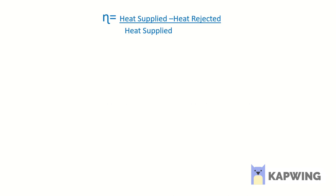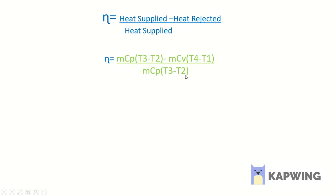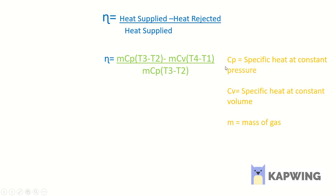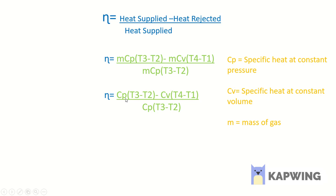Putting these values into the efficiency formula, we get: efficiency equals M·Cp·(T3 minus T2) minus M·Cv·(T4 minus T1), divided by M·Cp·(T3 minus T2), where Cp is the specific heat at constant pressure, Cv is the specific heat at constant volume, and M is the mass. Cancelling out the mass from numerator and denominator, we get: Cp·(T3 minus T2) minus Cv·(T4 minus T1), divided by Cp·(T3 minus T2).